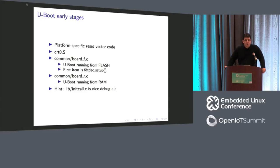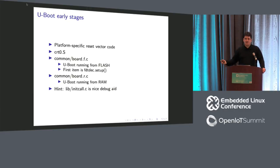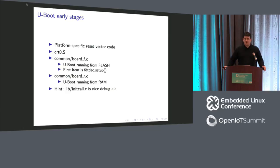Regarding the question of whether the device tree is compiled into U-Boot — since U-Boot can't read from the filesystem so early — there are two ways. You can embed the flattened device tree blob into U-Boot as a special section using CONFIG_OF_EMBED, or use CONFIG_OF_SEPARATE, which concatenates the DTB at the end of the U-Boot binary without compiling it in. The second option allows you to build a single U-Boot binary but attach different device tree blobs to it.